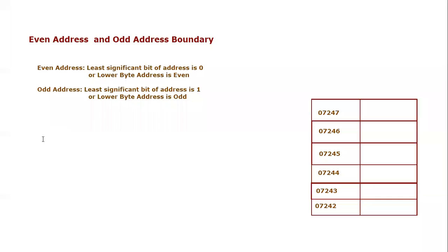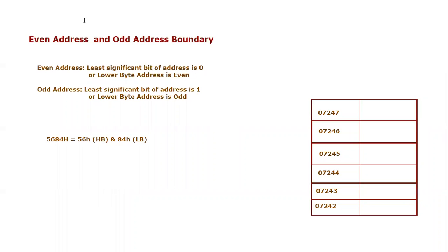Let's consider an example. Let's say we have information 5684 hex, and we are storing that information. So we know that 56 will be stored separately as the higher byte — 56 hex as higher byte — and 84 hex will be stored separately as lower byte. And let's say I'm storing it at address 07244. So the lower byte, 84, will go to address 07244 and 56 will go to the address above it.